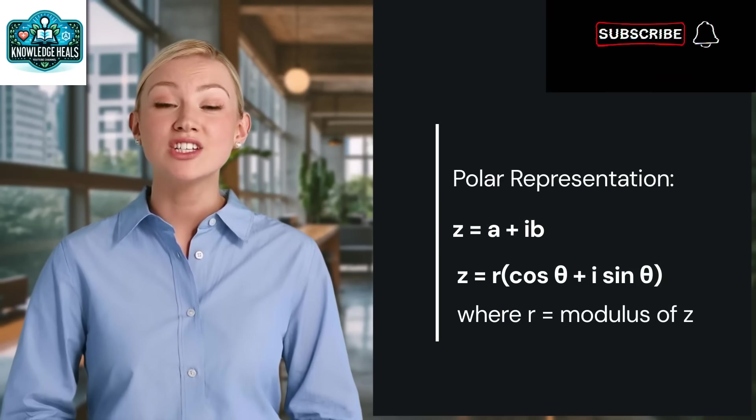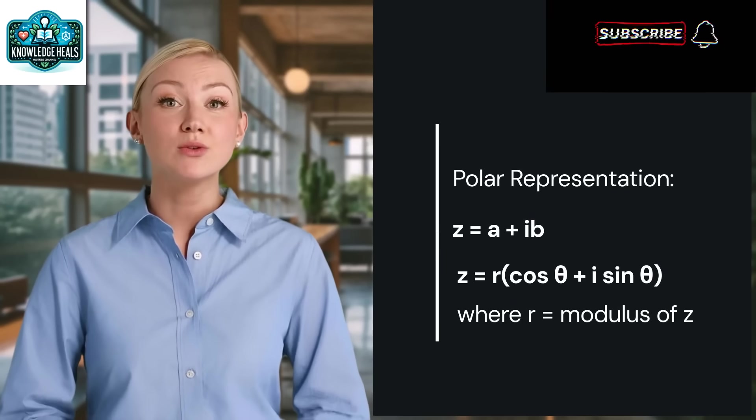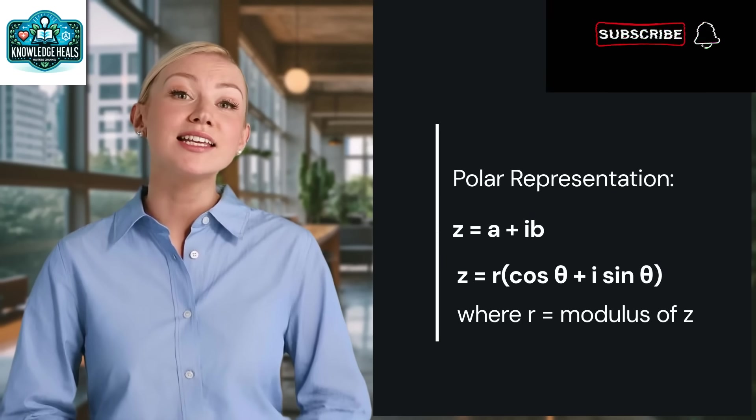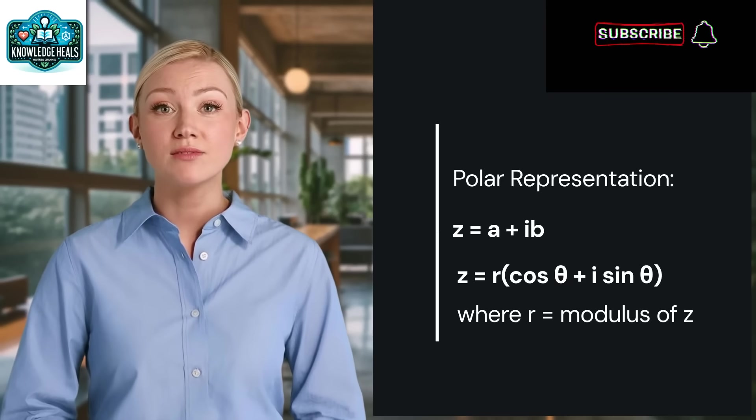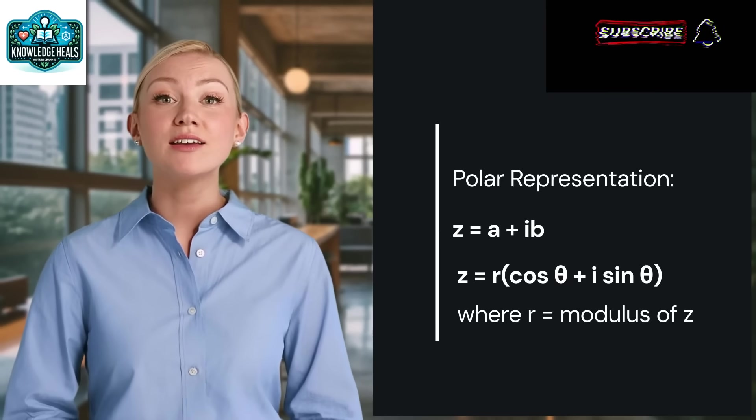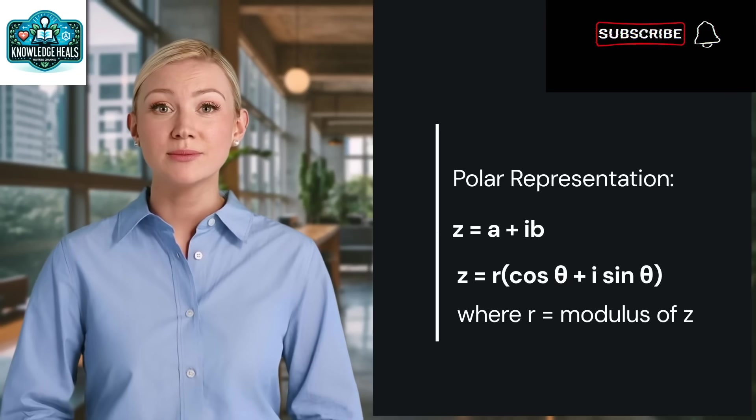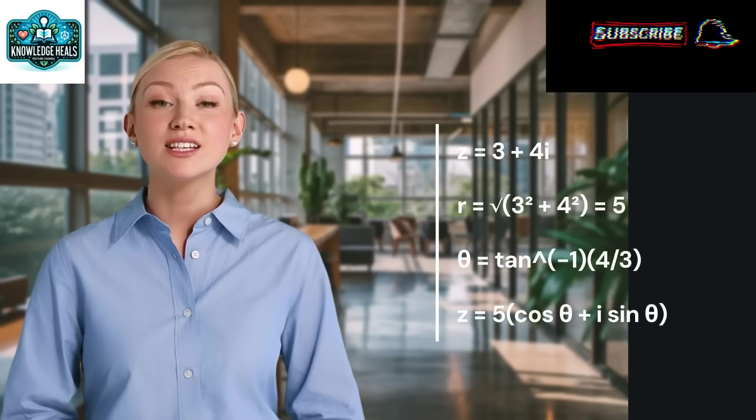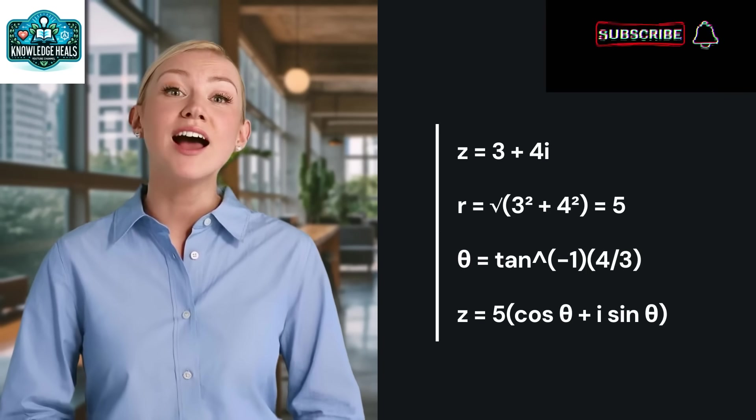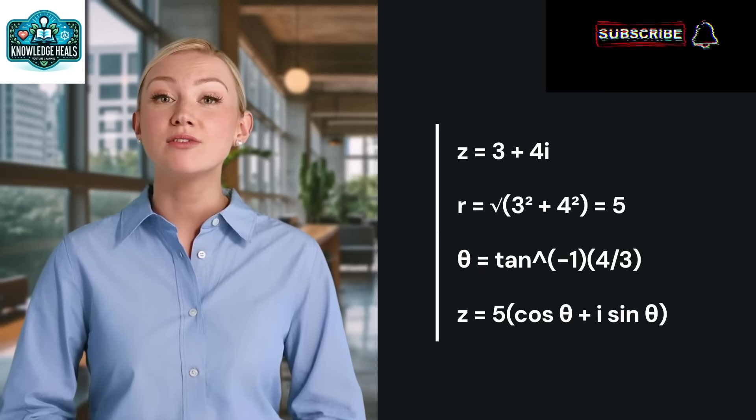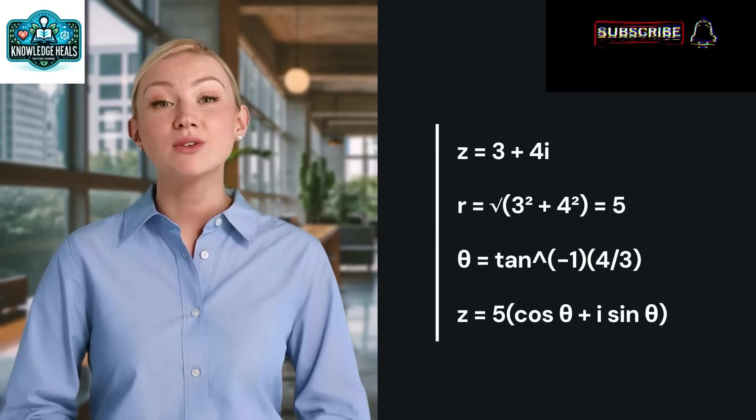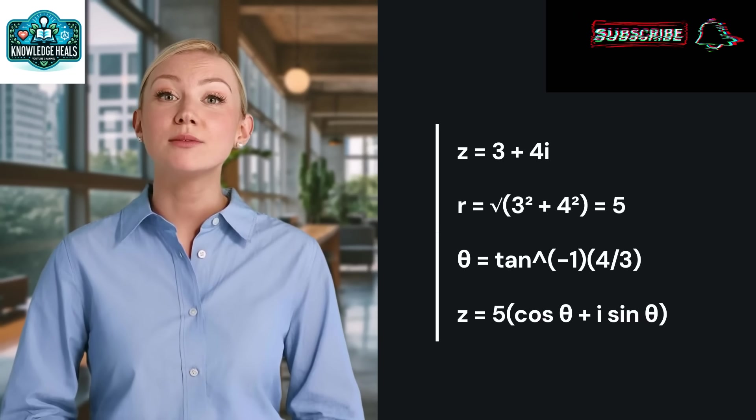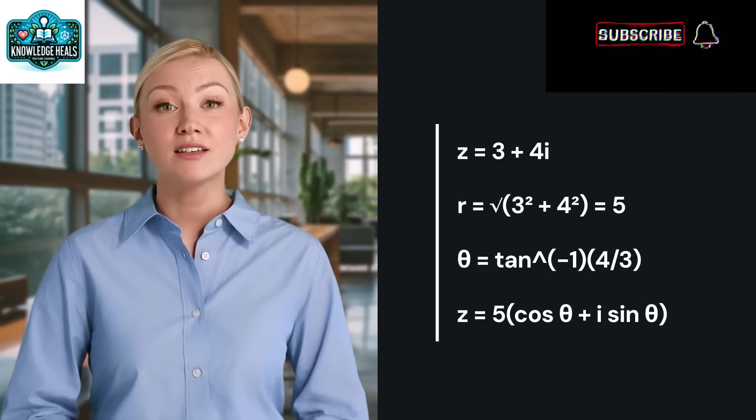In polar representation, a complex number Z equal to a plus IB can be represented as Z equal to R multiplied by cos theta plus I sin theta, where R equal to modulus Z. For Z equal to 3 plus 4I, R equal to root of 3 square plus 4 square, equal to 5, and theta equal to tan inverse 4 by 3. So, in polar form, Z equal to 5, cos theta plus I sin theta.